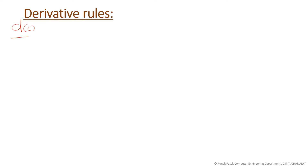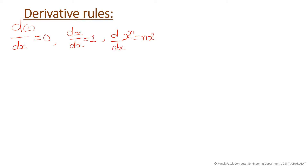The first rule: the derivative of any constant with respect to a variable gives you 0. Then the derivative of x with respect to x gives you 1. This can be derived from the rule d/dx of x^n equals n·x^(n-1). So if you find the derivative of x^1, that gives 1·x^(1-1) which equals 1.